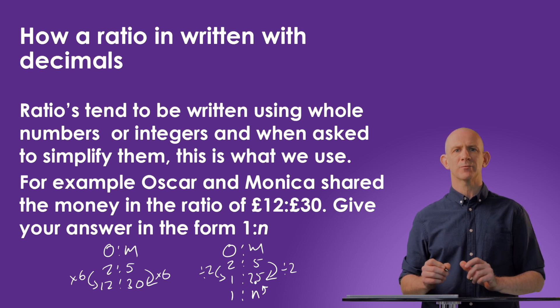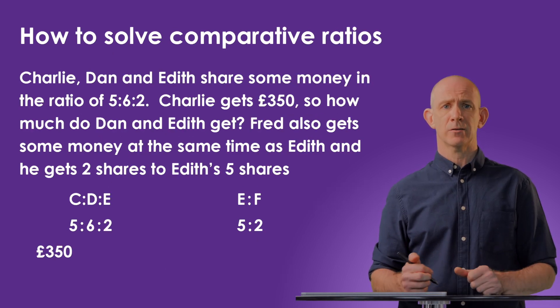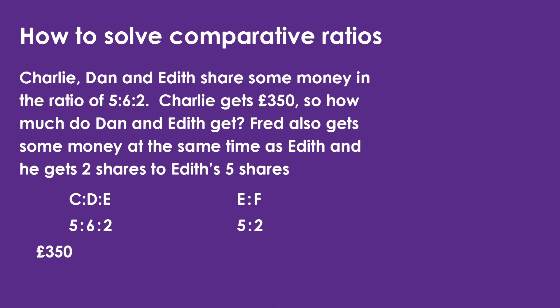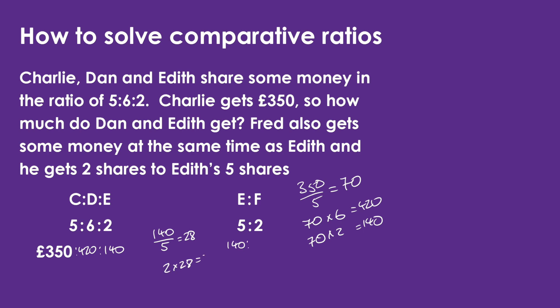Lastly, we're going to look at how to solve questions that have two ratios with a comparative element. From the Charlie, Dan, and Edith question, their shares are in the ratio of 5 to 6 to 2. We also have another ratio comparing Edith to Fred, where Edith gets 5 shares compared to Fred's 2 shares. Using the multiple of £70 per share from the original ratio — since 350 divided by 5 equals 70 — we can calculate Dan gets £420 and Edith gets £140. Moving to the Edith-to-Fred ratio, we divide Edith's £140 by her 5 shares to get £28 per share, then multiply Fred's 2 shares by £28 to find that Fred receives £56.